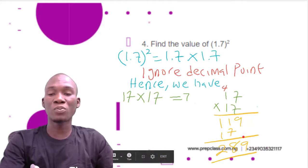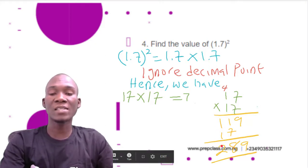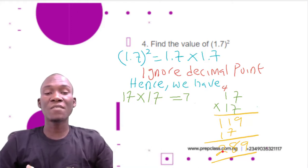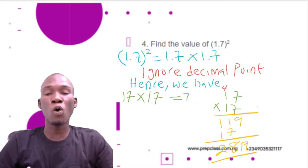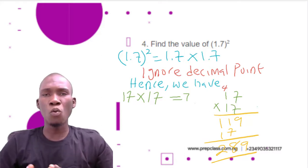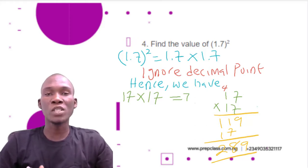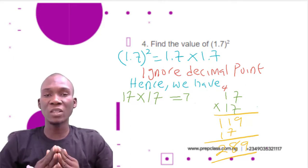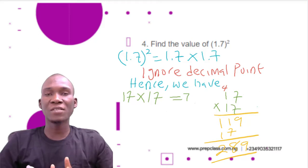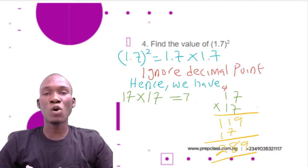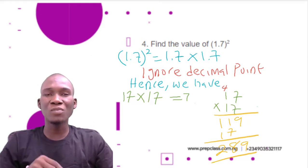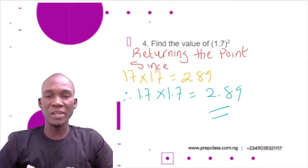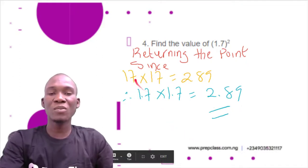Adding: bring down 9; 1 + 7 = 8; 1 + 1 = 2. So 17 × 17 = 289. But the question asks for 1.7², not 17². Since we ignored the points, we now need to return them. In 1.7 there is one digit after the point, and the second 1.7 also has one digit after the point — two digits total after the decimal.